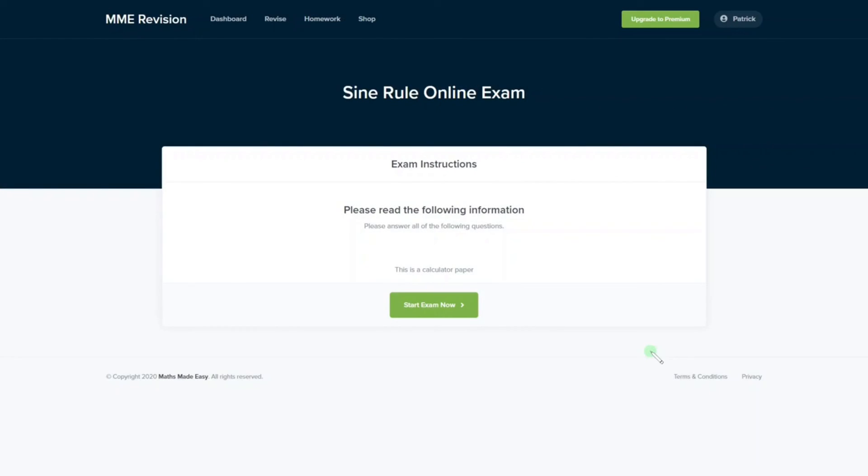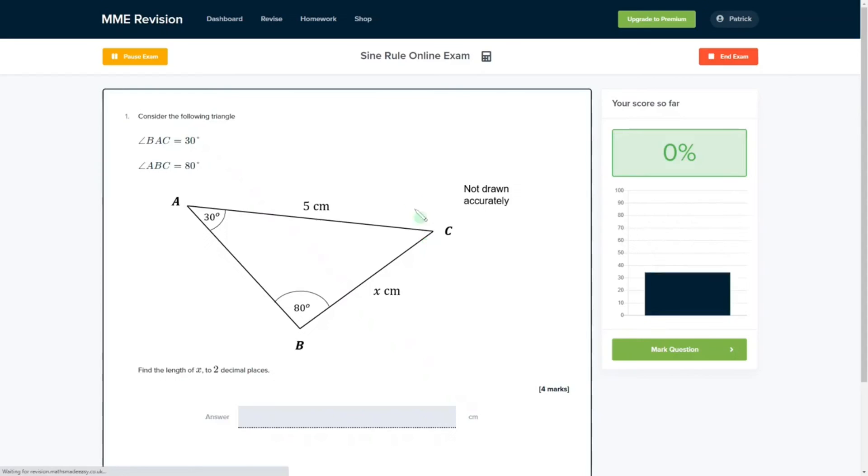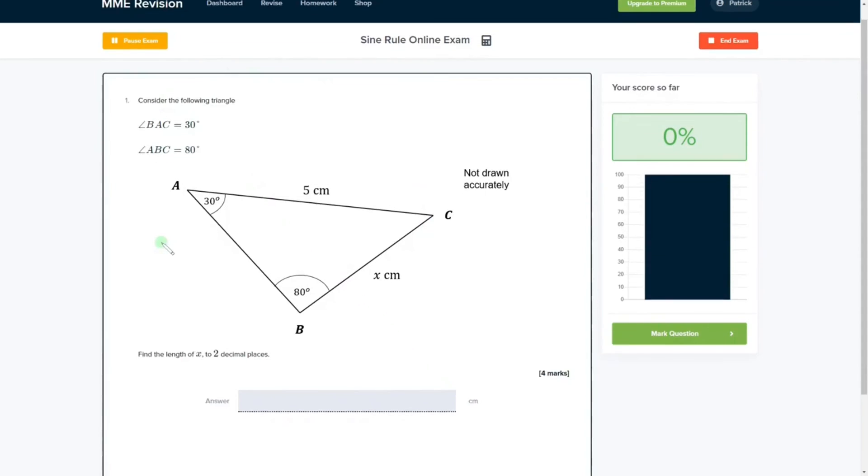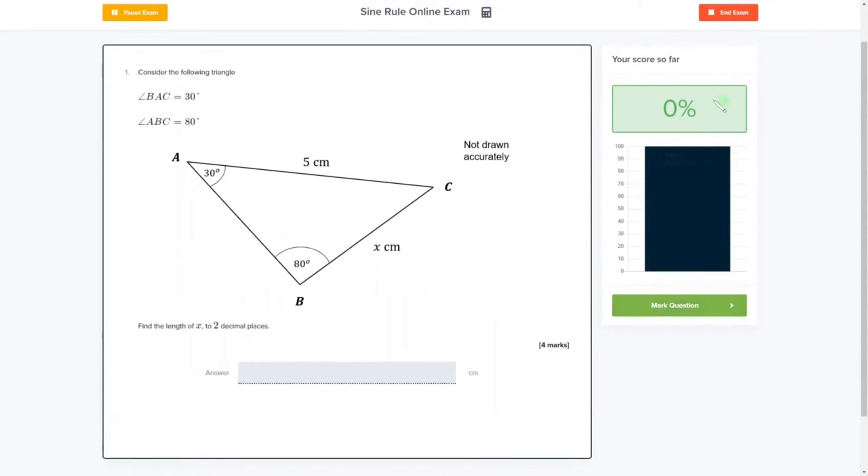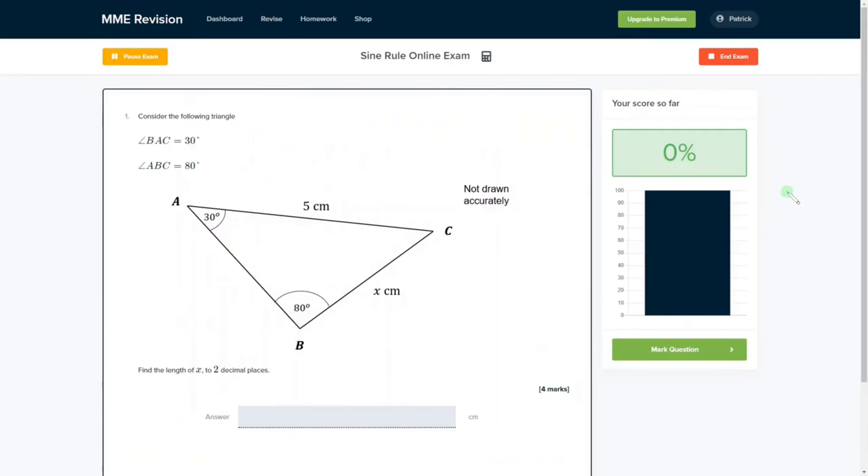So, if you're feeling ready to tackle some sine rule questions, then you can do so with our online exam. It's available through our revision platform, and if you take the test, you'll find loads of different questions to have a go at, and you get instant feedback on all of them, so you can track your progress, find out where you went wrong, see the solutions, and so on. If you're interested, then click the link below. You can have a go at the exam now. It will take you straight there.